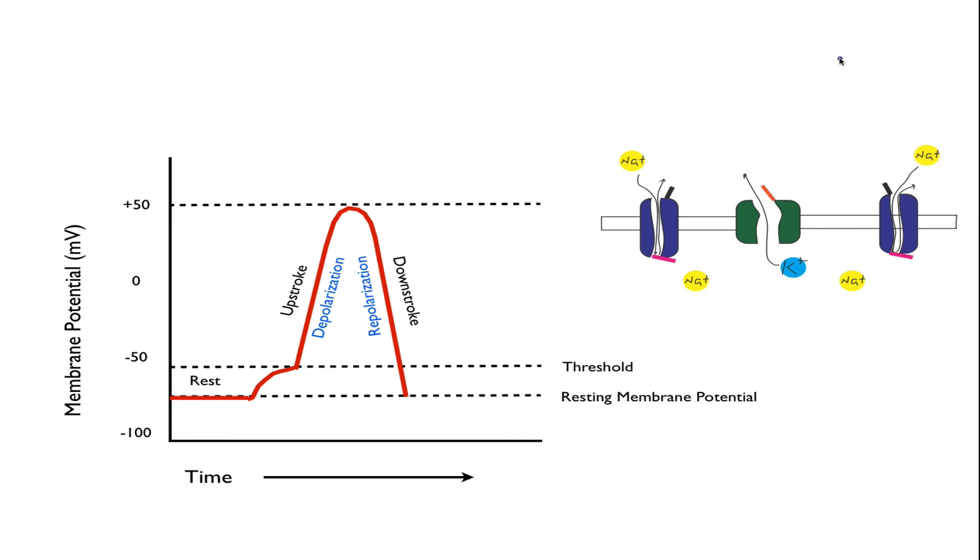But what goes up must come down, and so we arrive at the downstroke of the action potential. We can see the changes in the ion channels that are responsible for this phase. The activation gates of the sodium channel have closed, blocking the further influx of sodium, and importantly, the potassium channel's gate has opened, allowing for the swift efflux of potassium. It's this outward flow that causes repolarization of the membrane potential. It effectively reverses the upstroke.